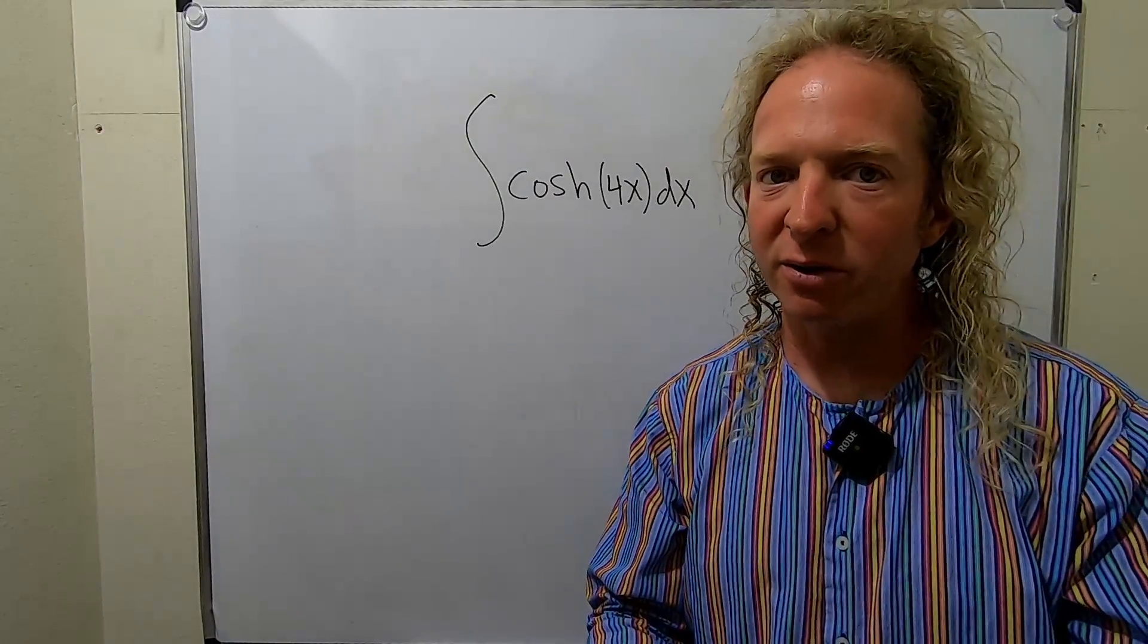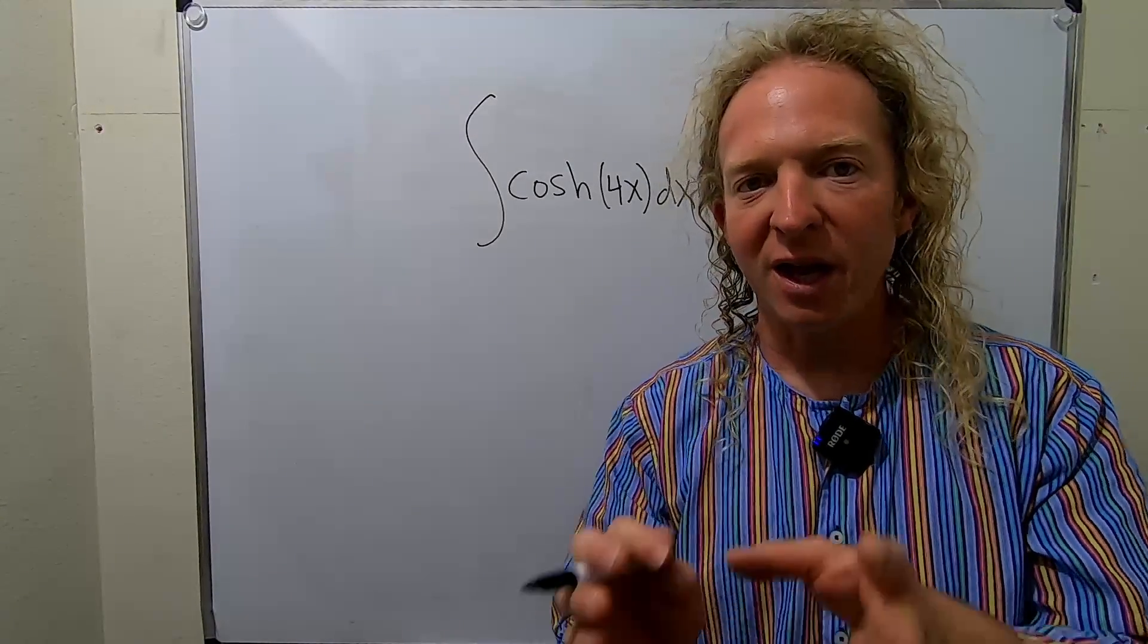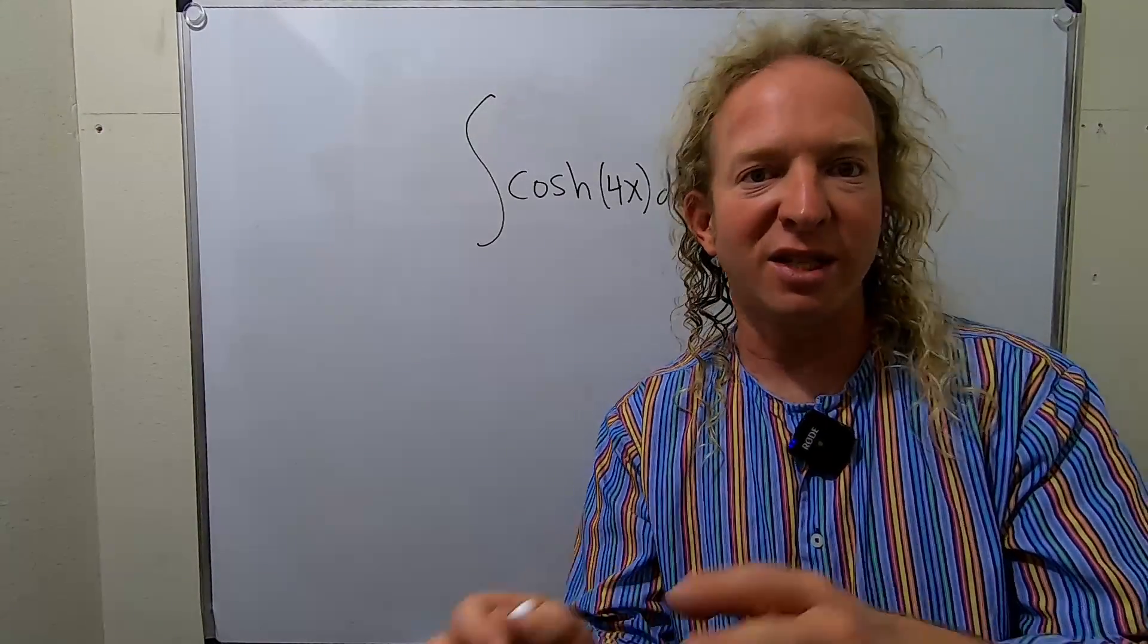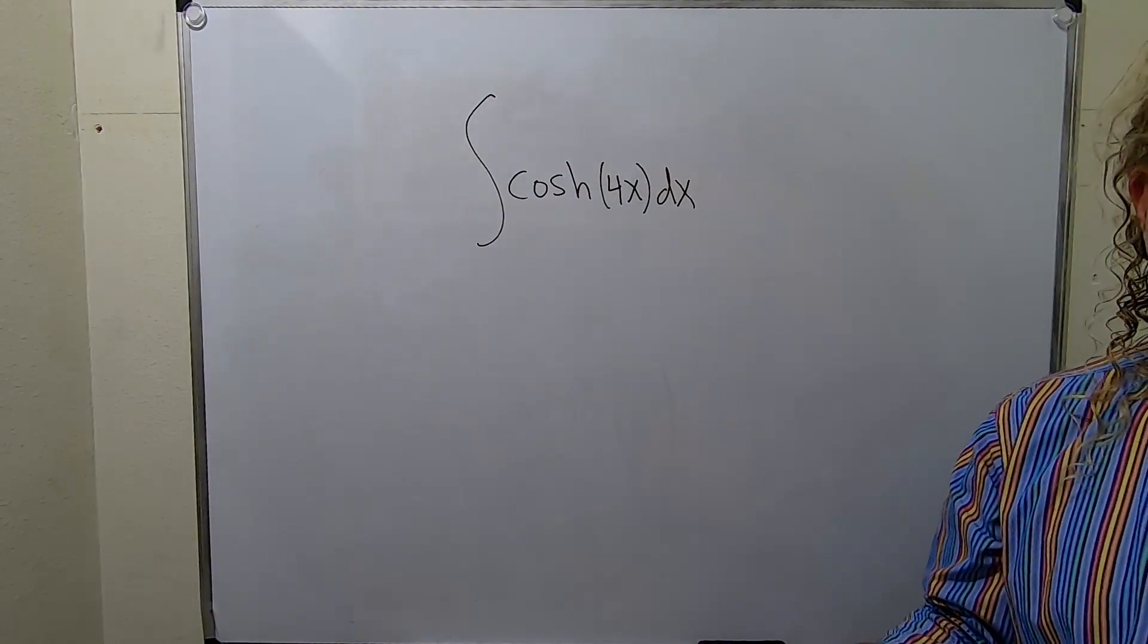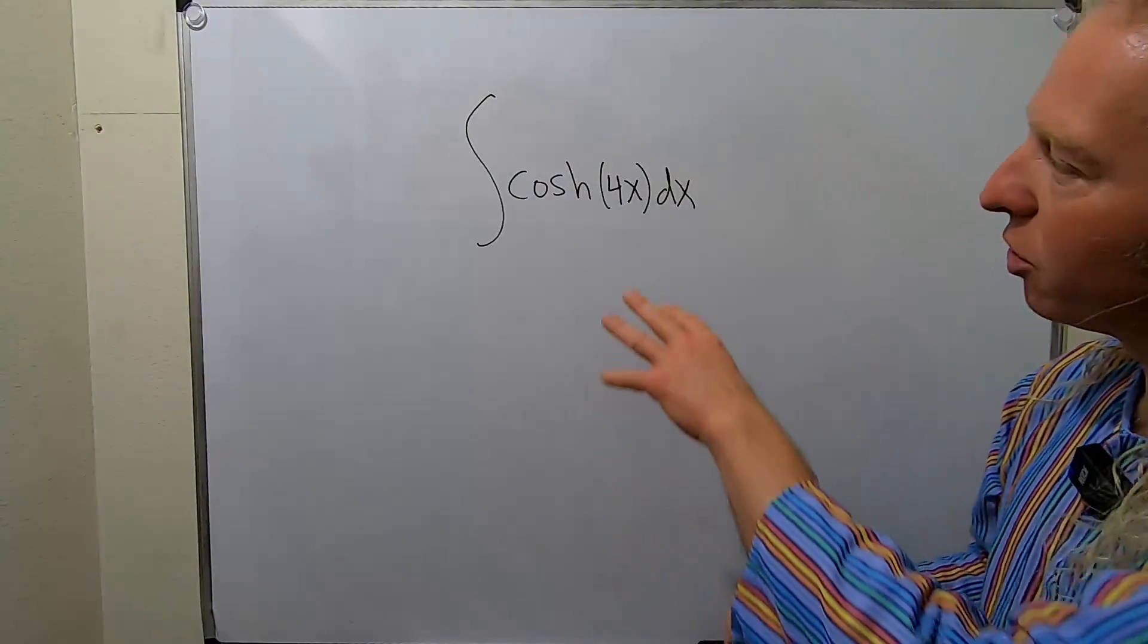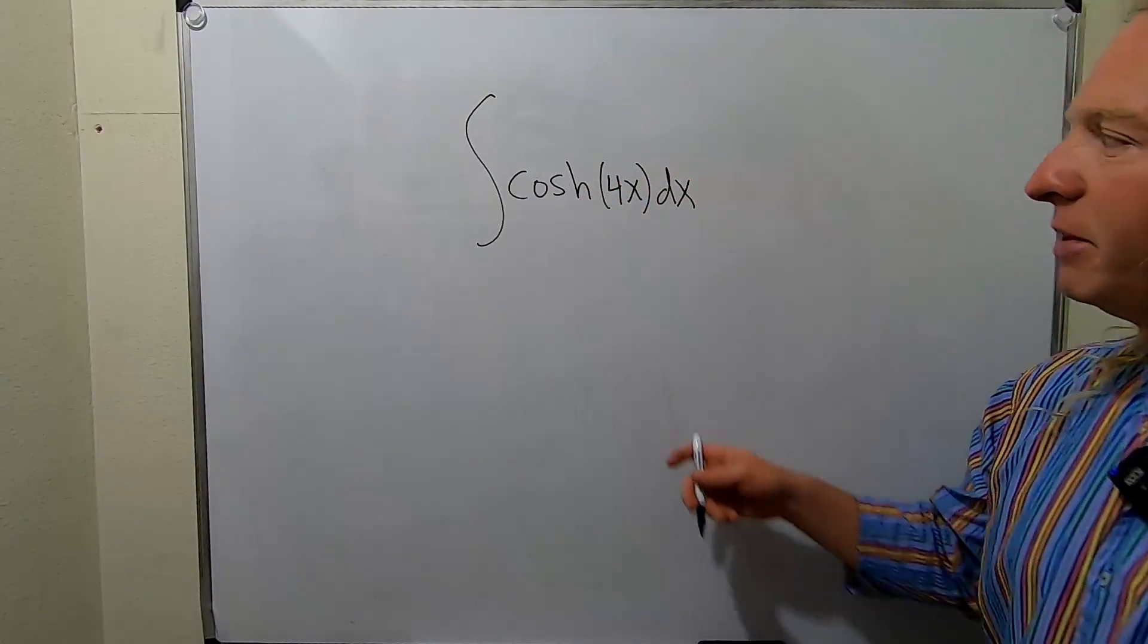Recall that if you just have the hyperbolic cosine of x, cosh(x), and you integrate it, you just get sinh, because the derivative of sinh is cosh. So if you integrate cosh, you just get sinh, except here you have a 4x.